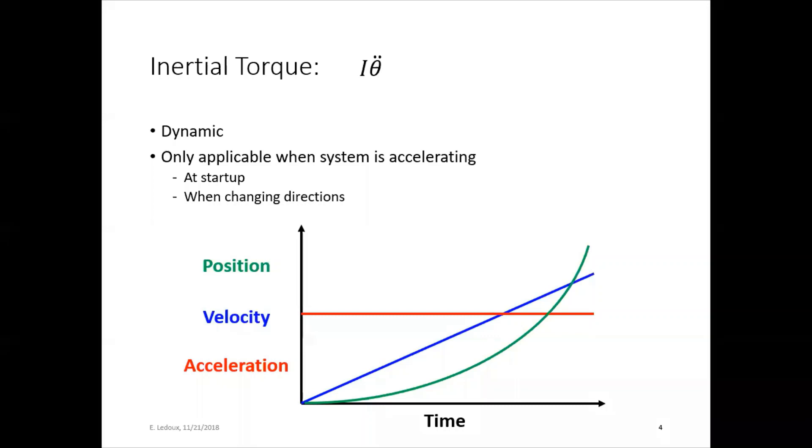First, the inertial torque. So this is dynamic because it's proportional to acceleration. It's only applicable when the system is accelerating. So at startup or at slowdown or when you're changing directions. Generally, the θ̈ will be a constant value. And that's something that you choose.